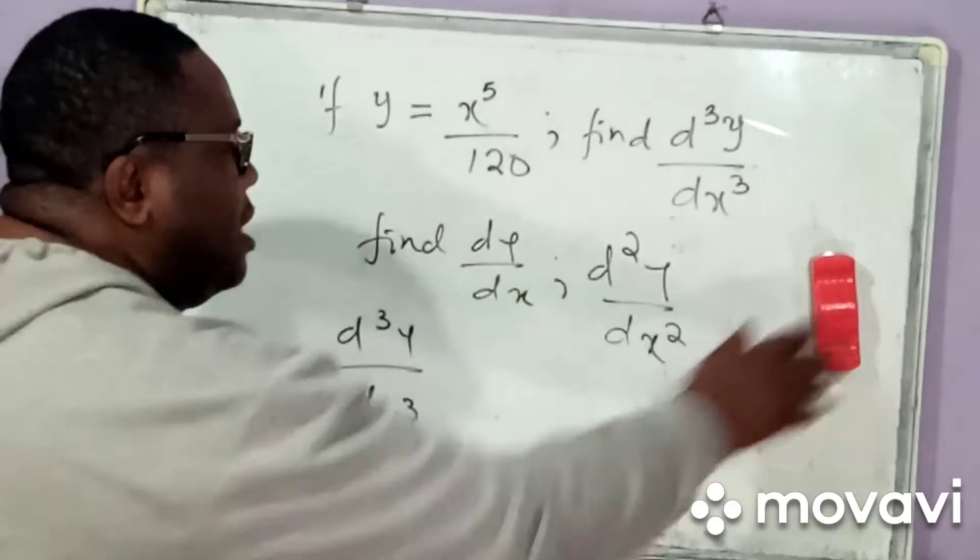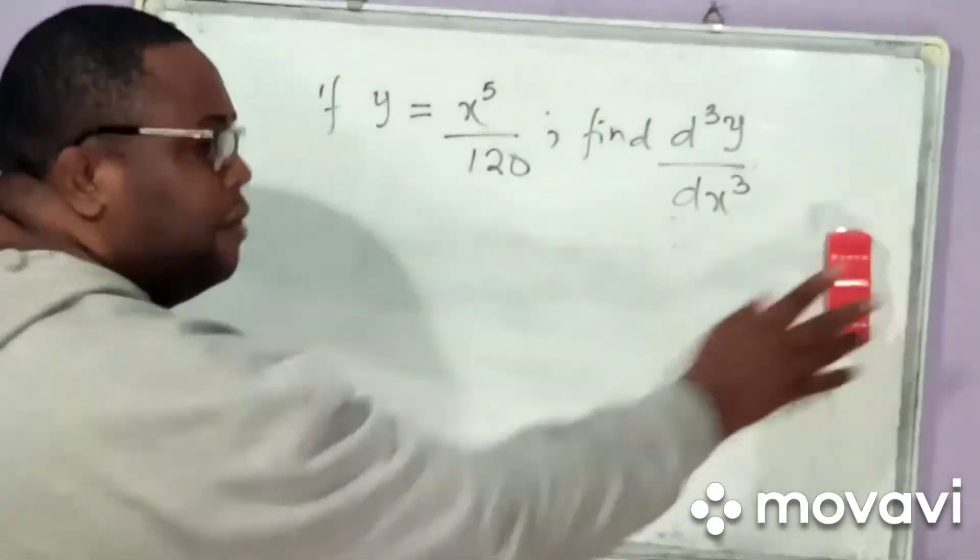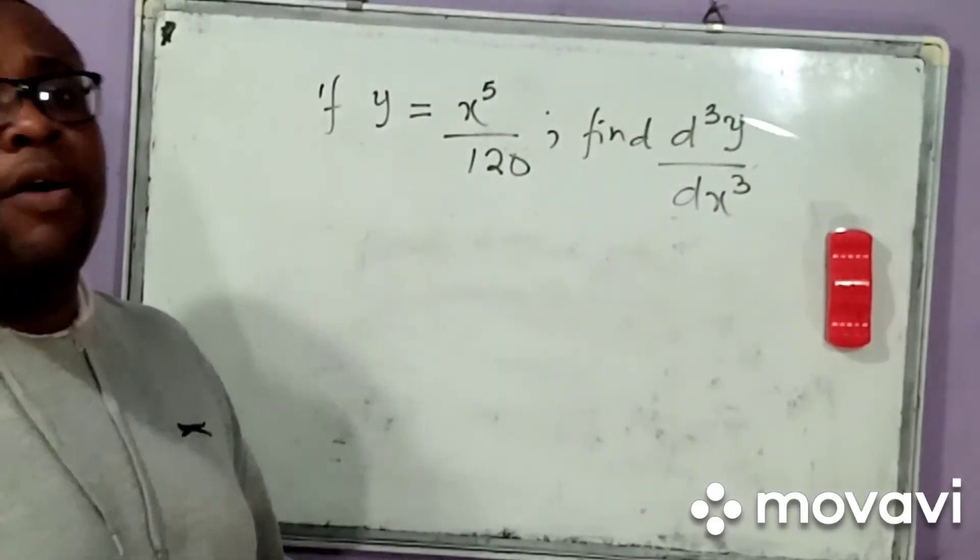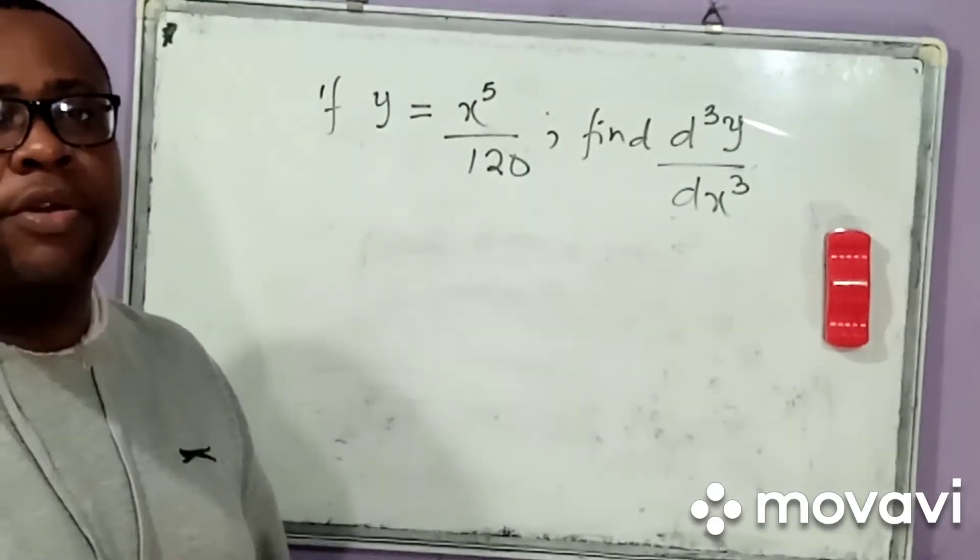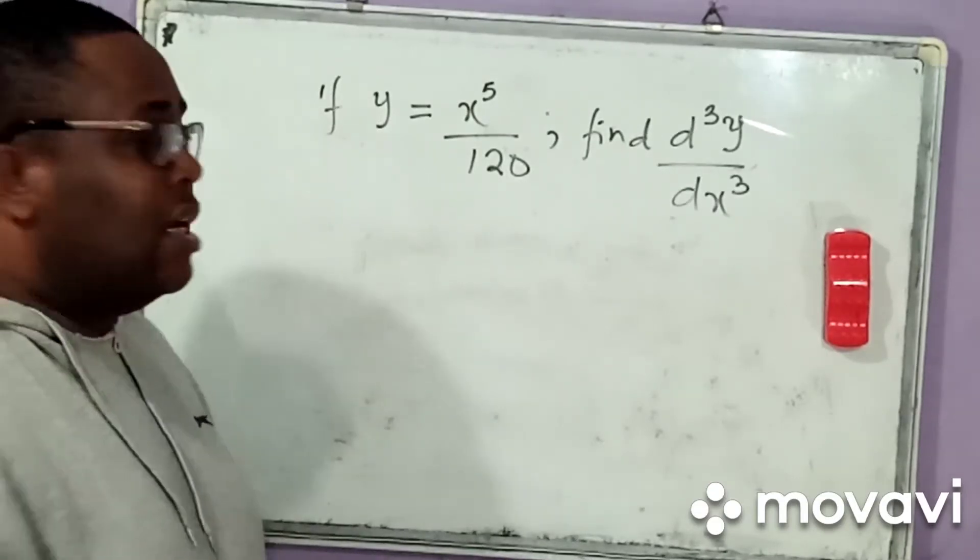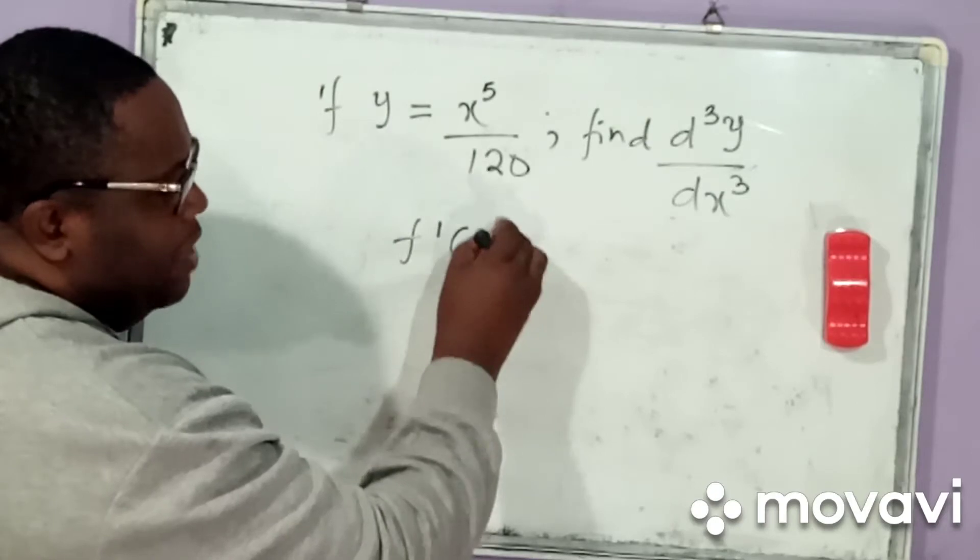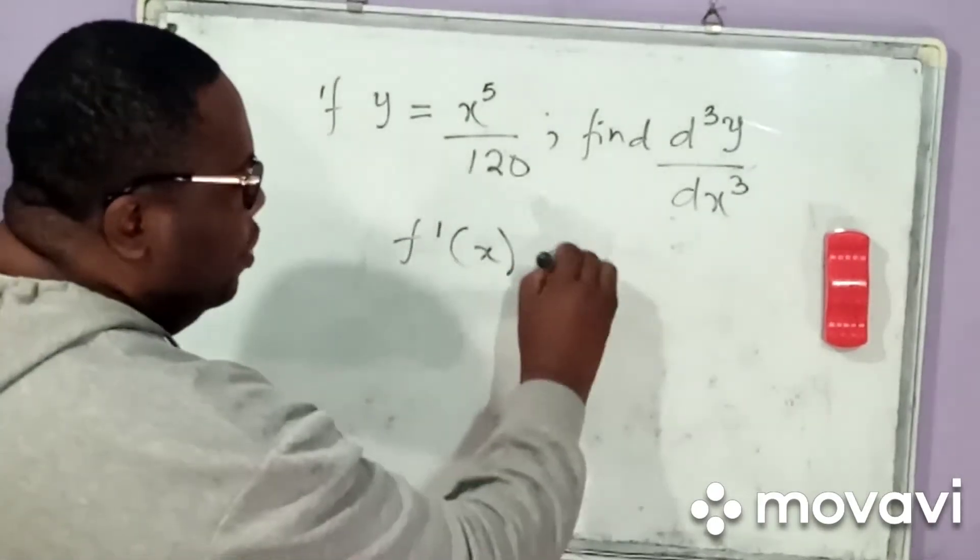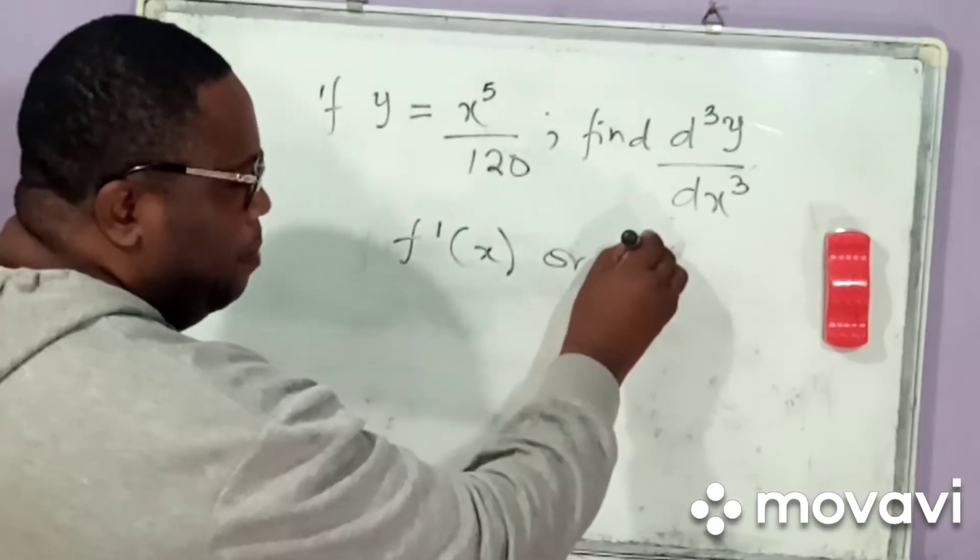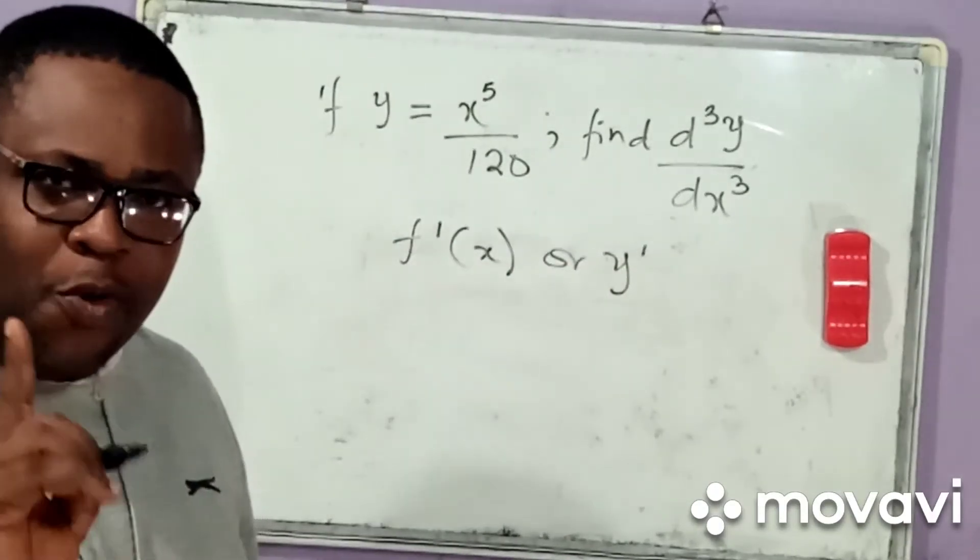Now, there are other notations, conventional notations. Instead of just asking you to find d squared y by dx squared, you can be asked to do f prime of x. This simply means differentiate once. Or, they can use the notation y prime. It means to simply differentiate once.